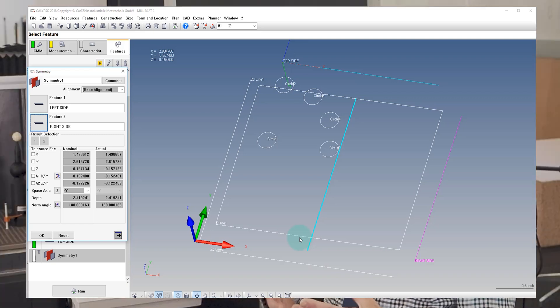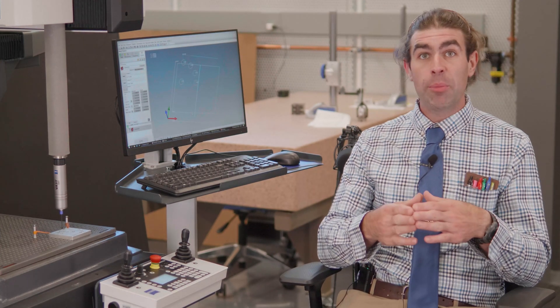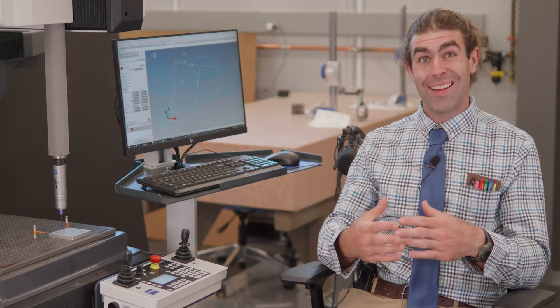You'll notice on the screen we've got a bright blue line going through the middle of the part. That is what is being developed by the two sides of the part. Makes sense, right? And again, we can't adjust any of the nominals for this feature because it's derived from other features.